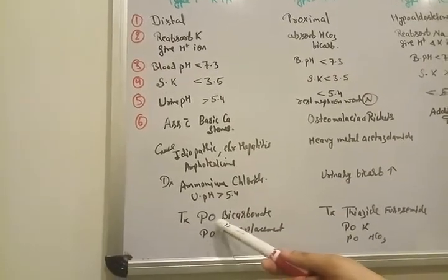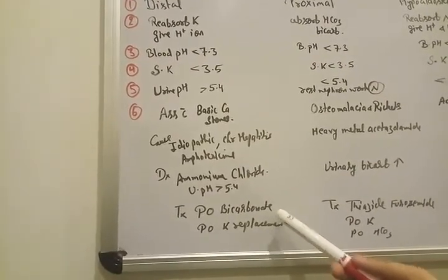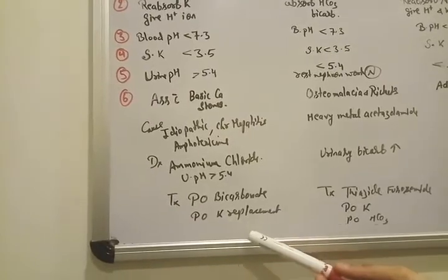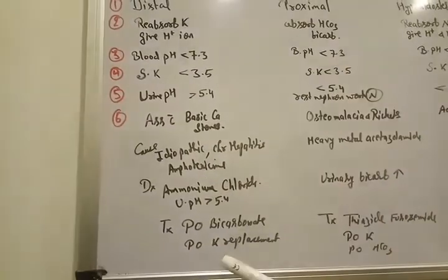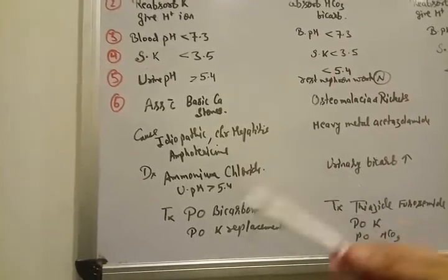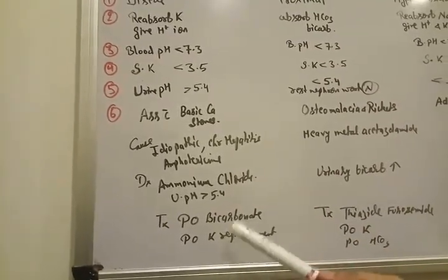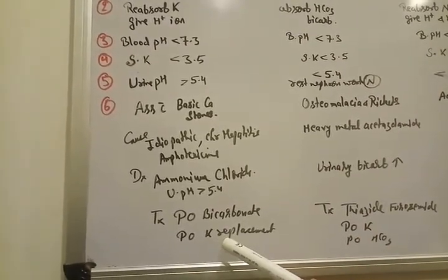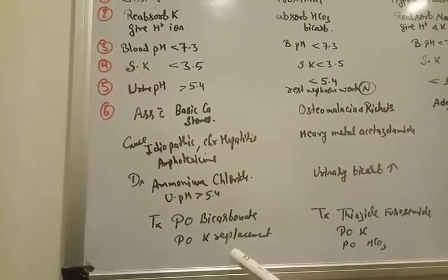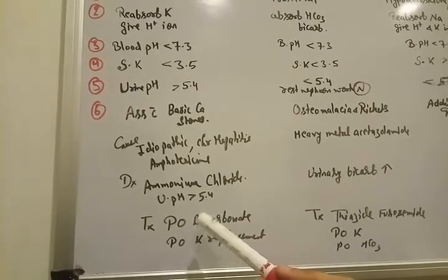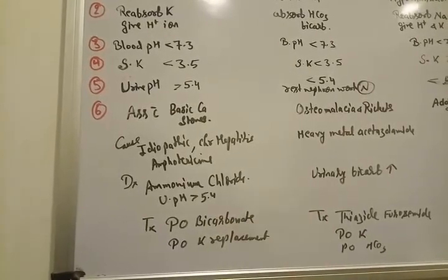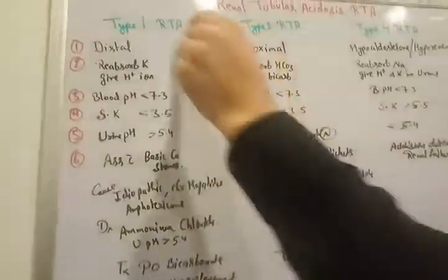So how to treat? Treat by per oral bicarbonate. And treat by potassium replacement. Because there is hypokalemia. So we need to give potassium per oral. Maybe kisol syrup. Potassium syrup. 2 tablespoons. It is 10 ml. 3 times a day. Or we can give some IV potassium also. And bicarb. We can give per oral also. But we can give in IV formation also. So till R1RT. I hope it's clear.